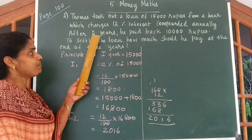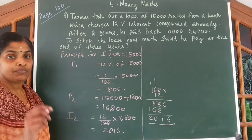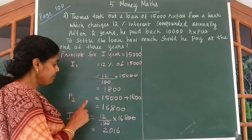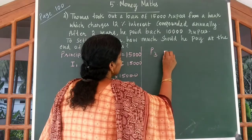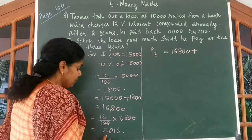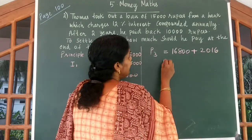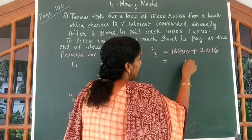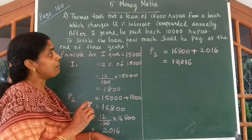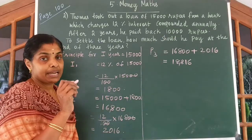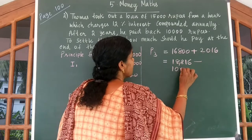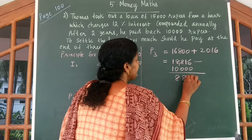Now, at the beginning of the third year, P3 = ₹16,800 added to ₹2,016, which gives ₹18,816. From this amount we have to subtract ₹10,000, because he paid ₹10,000 after two years. So what remains is ₹8,816.